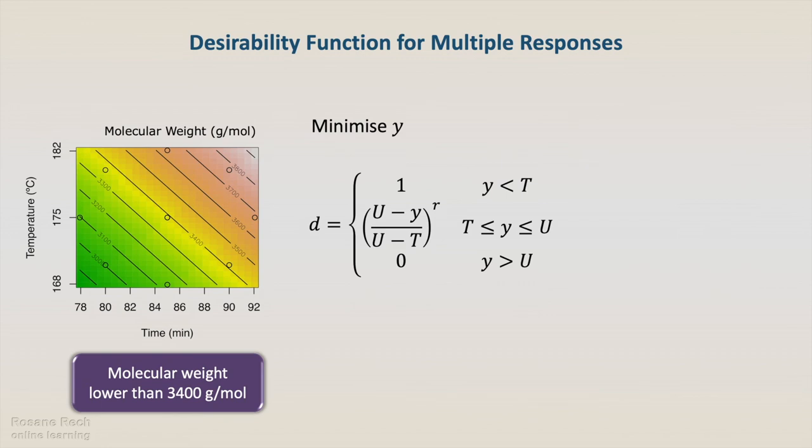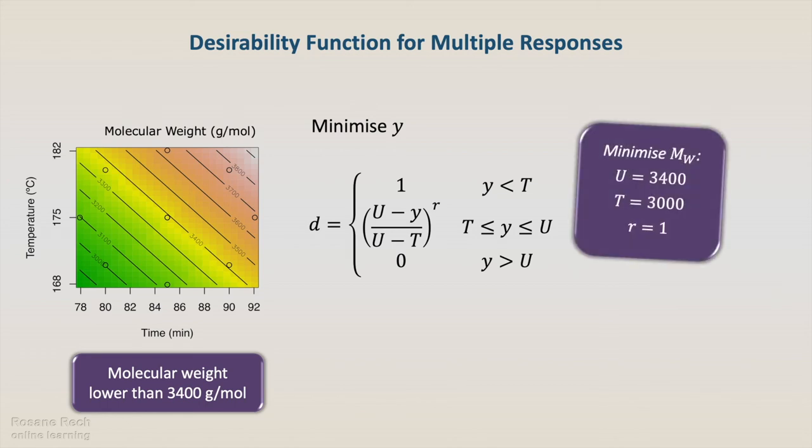Finally, the molecular weight has a maximum limit, thus we are going to use a desirability function to minimize its value. The upper limit is 3400, and the target value can be defined around the lower observed, 3000.